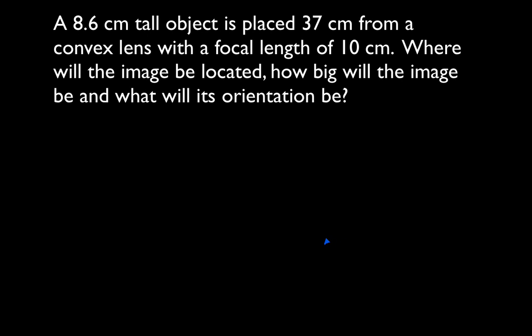Okay, this is our problem. It says we have an object that's 8.6 centimeters tall. It's 37 centimeters from a convex lens and the focal length of this lens is 10 centimeters. And we want to know where will the image be, how big the image will be, which is basically its magnification, and what its orientation will be. Will it be inverted or upright?